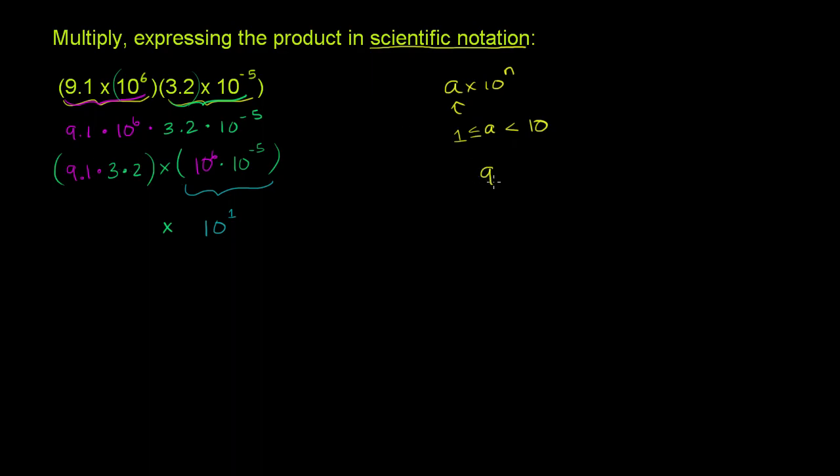And that's going to be multiplied by 9.1 times 3.2. So let me do that over here. So I have 9.1 times 3.2. So at first I'm going to ignore the decimals. I'm just going to treat it like 91 times 32. So I have 2 times 1 is 2. 2 times 9 is 18. Take a 0 here, because I'm in the tenths place now.